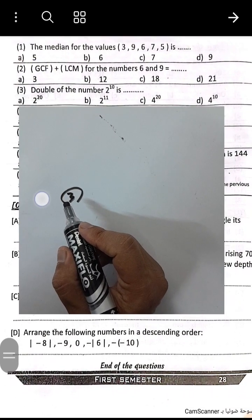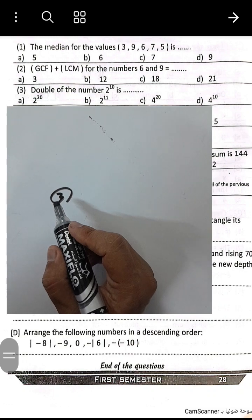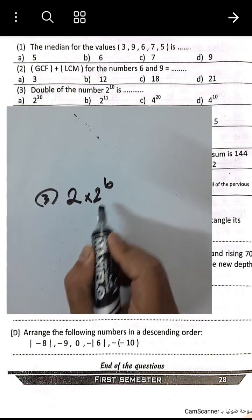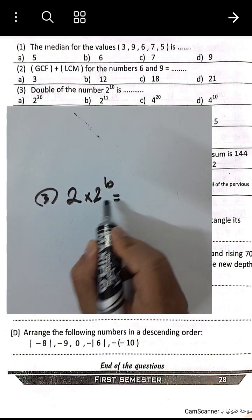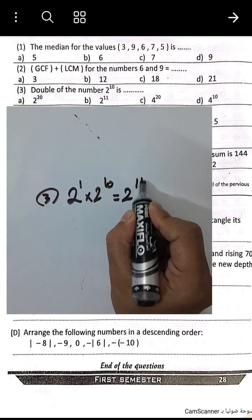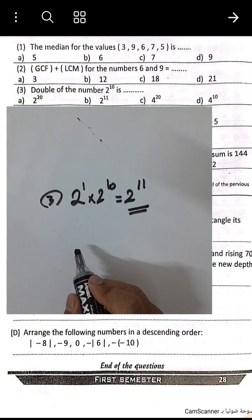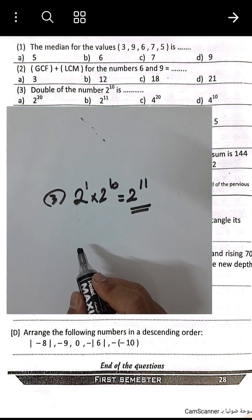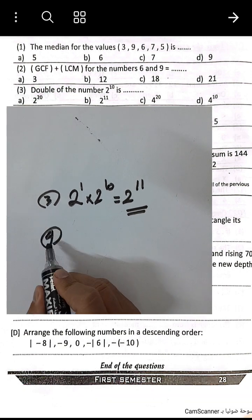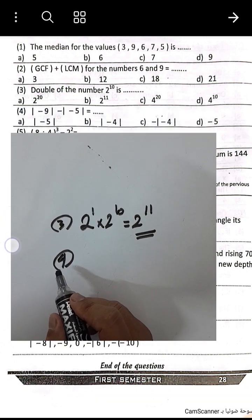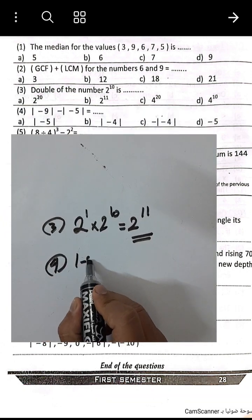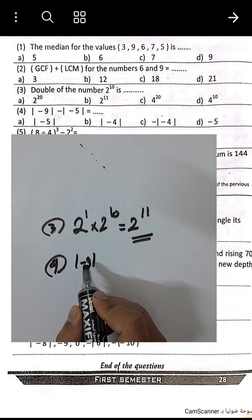Question number 3: Double of the number 2 to the power n times 2 to the power n — add the exponents. The result is 2 to the power 11. Choose letter B.